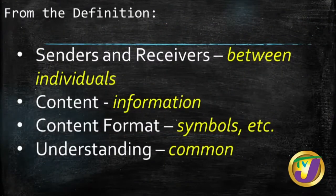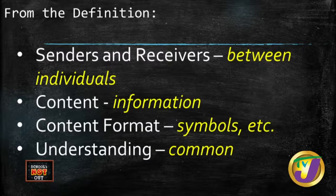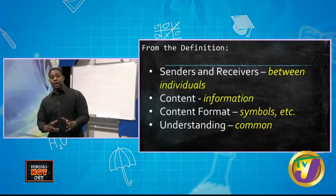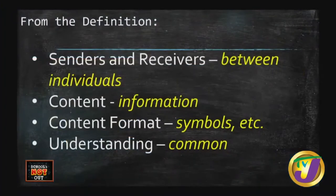So what are the important things when it comes to communication? It must be between individuals. There must be content — there must be information. There must be a standard way in which the content is represented. And there must be understanding — a common understanding between the parties communicating. That is true for us in real life, and we have to adapt that very same thing when it comes to computers.